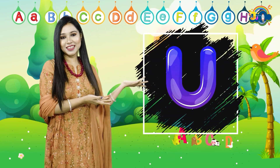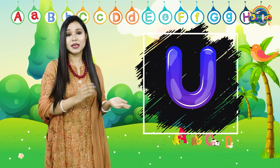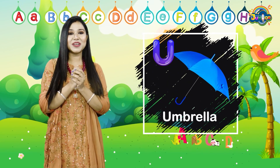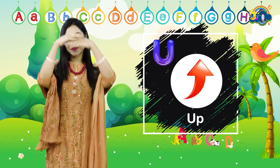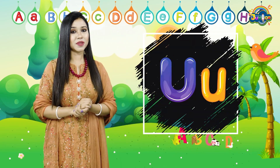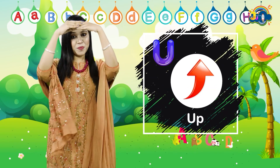Here is the letter U. U for umbrella. U for up. And the sound of U is U. U, U, up. U, U, umbrella.